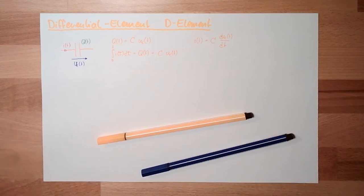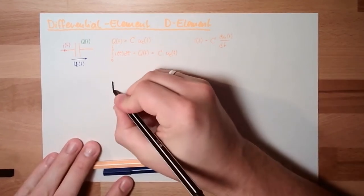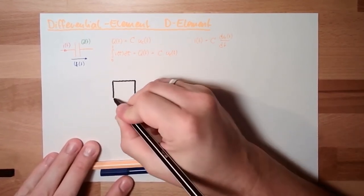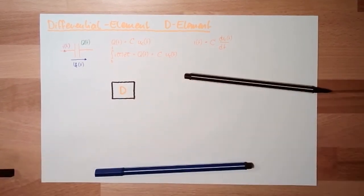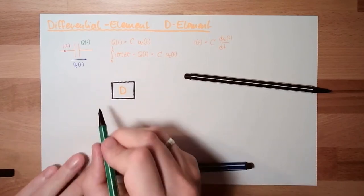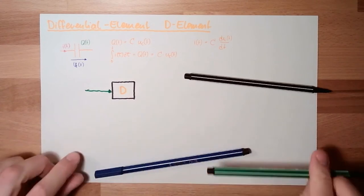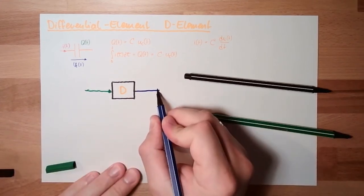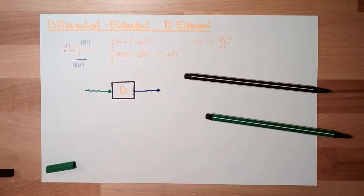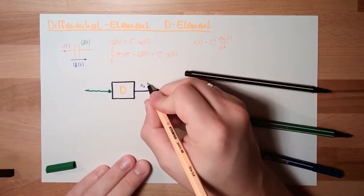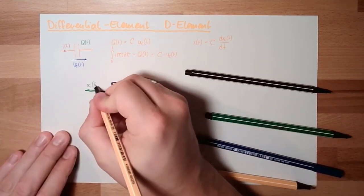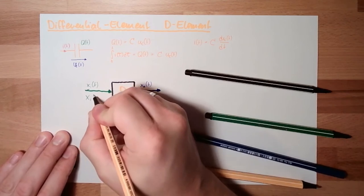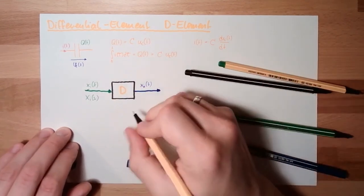Now, let's assume again, this is some sort of transfer function. So this time, this is a D element. We again do have the input here and the output. So we do have here the output XO from T, we do have here the input XI from T. And of course, after Laplace transformation, we have XI from S and XO from S.